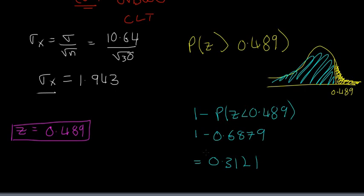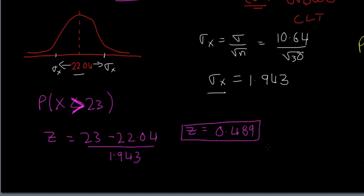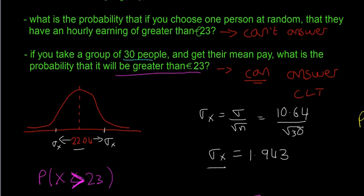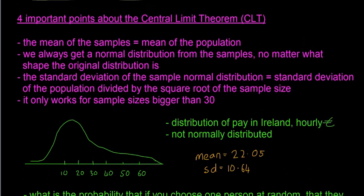That is the probability that if you take a group of 30 people and get their mean pay, it will be greater than 23 euro. These are the sorts of questions you can answer with the central limit theorem.